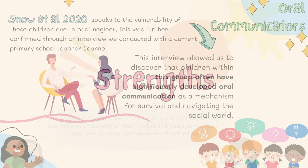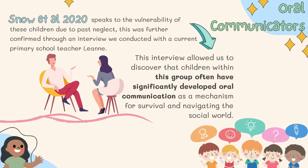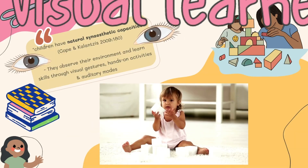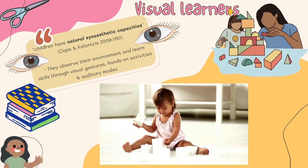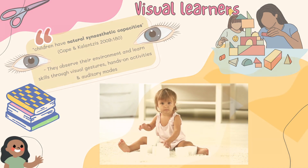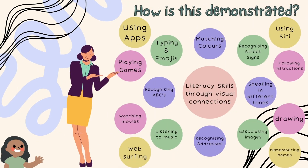Drawing from Snow et al., these children thrive in verbal communication to form relationships and manage difficult social interactions. Their oral communication compensates for their poor literacy skills. Cope and Kalantzis contend that children have a natural synesthetic capacity, which allows them to draw from gestures, visuals, and sounds. Evidently, these children possess literacy skills to memorize synesthetic information important to their survival.